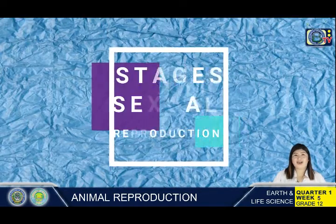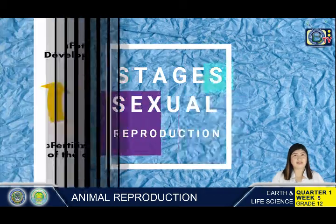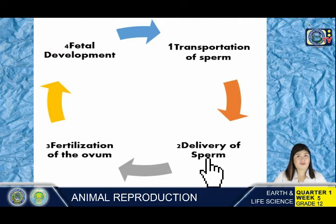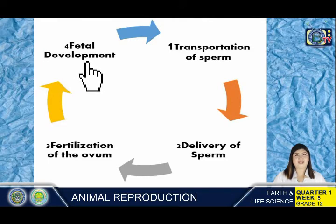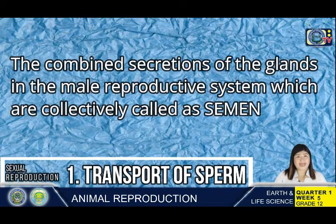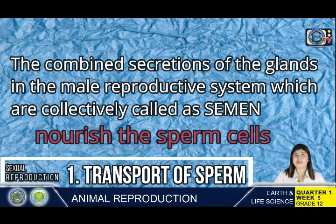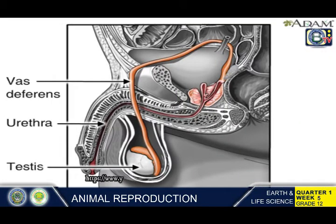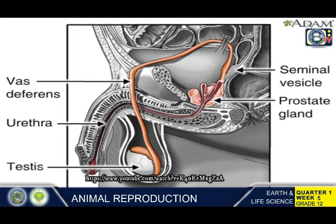The stages of sexual reproduction in animals are: first, the transportation of the sperm; second, the delivery of the sperm; third, the fertilization of the ovum; and fourth, fetal development. In transporting the sperm, the combined secretions of the glands in the male reproductive system, collectively called semen, nourish the sperm cells. The testes are where sperm are produced, and they are linked to the rest of the male reproductive organs by the vas deferens, which extends over the base of the pelvic bone and wraps around the ampulla, seminal vesicle, and prostate.